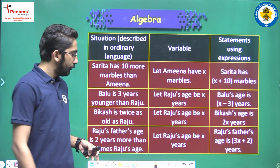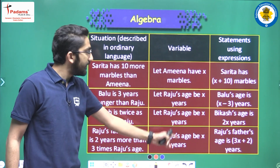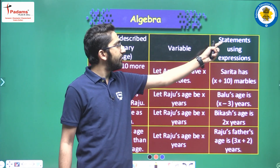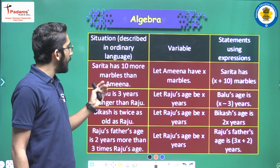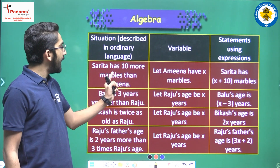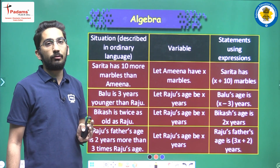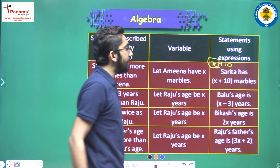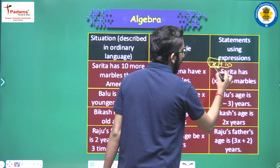Here we have some examples. First: let Amina have x marbles. This column tells us about the variable we have to take, this is the situation described, and this is the statement using expressions. Let's see them one by one. Sarita has 10 more marbles than Amina. Let Amina have x marbles, so Amina has x marbles. Sarita has 10 more, so that will be x plus 10.